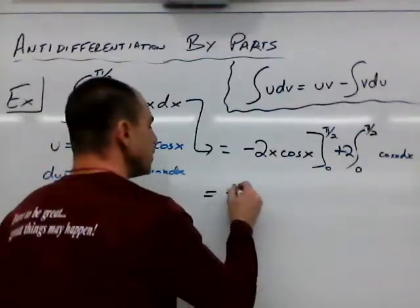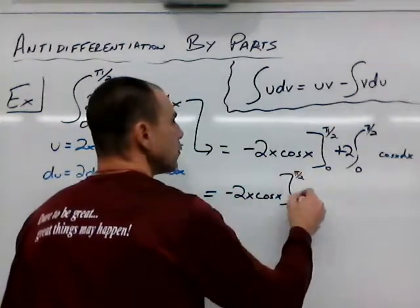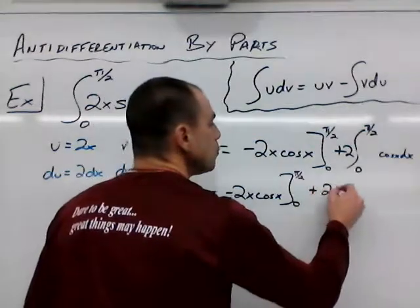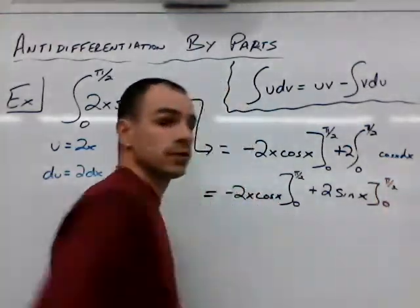So what we're looking at here is negative 2x cosine x being evaluated from 0 to pi over 2 plus 2 sine x, and that's also being evaluated from 0 to pi over 2.